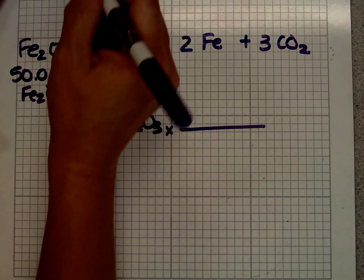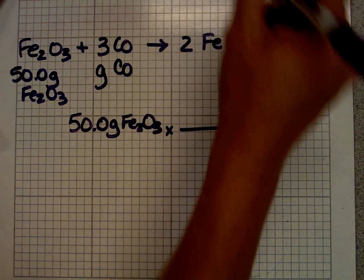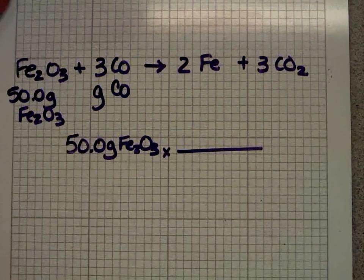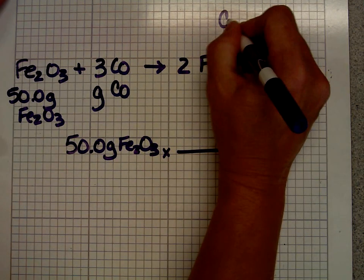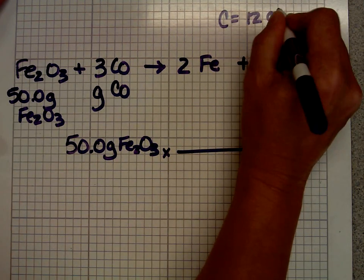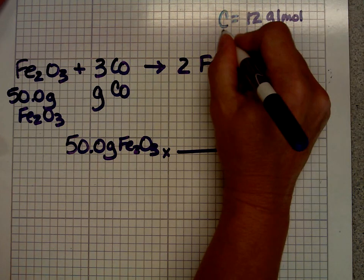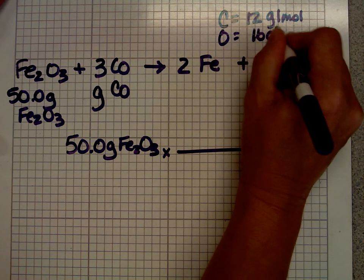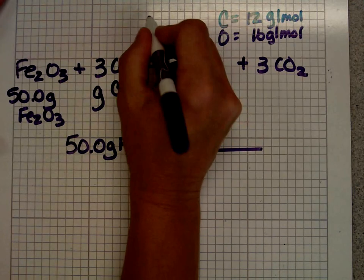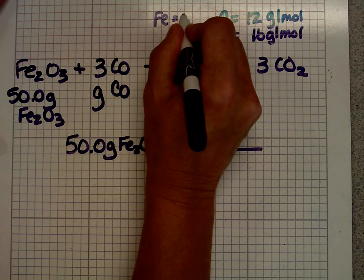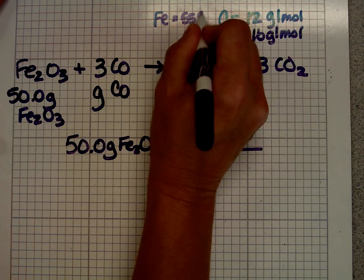So before I go any further, let me look a few things up. I know that the, let me move my board down so you can see this. I know that the mass of carbon is 12 grams per mole. I know that the mass of oxygen is 16 grams per mole. And I just looked up the mass of iron. I didn't know this off the top of my head. It's 55.9 grams per mole.